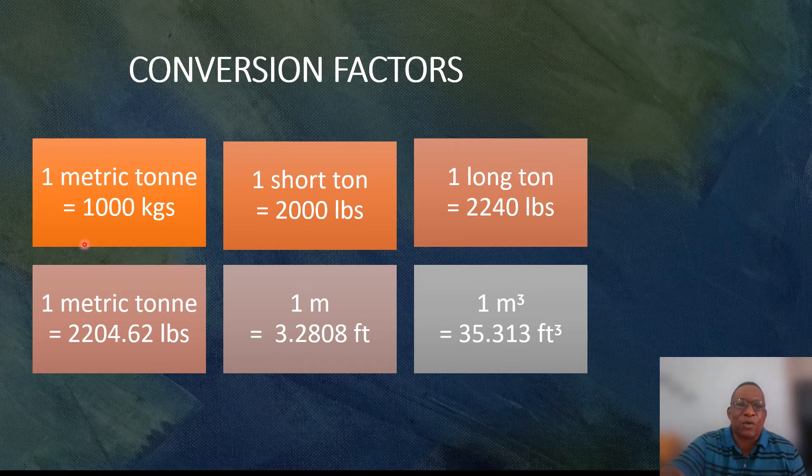First, we have one metric ton which is equal to 1,000 kilograms. We have one short ton, which is normally used in the US, which is equal to 2,000 pounds. We have one long ton which is equal to 2,240 pounds.